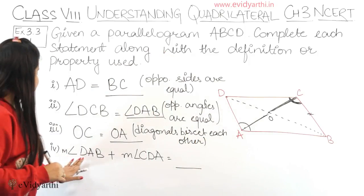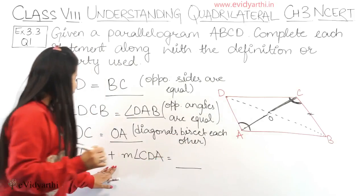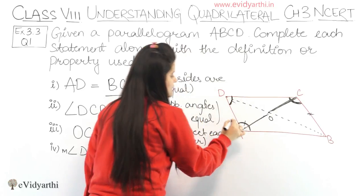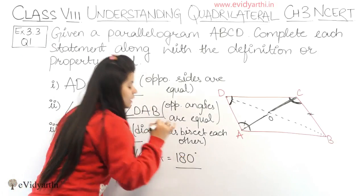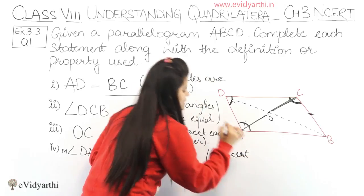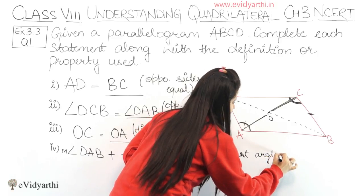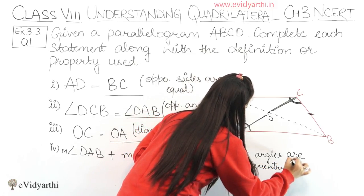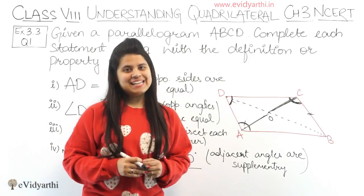The last part: measure of angle DAB plus measure of angle CDA. The sum of these two adjacent angles will be 180 degrees. Why? Because in a parallelogram, adjacent angles are supplementary — supplementary means their sum is 180 degrees. So that's why their sum will be 180 degrees.